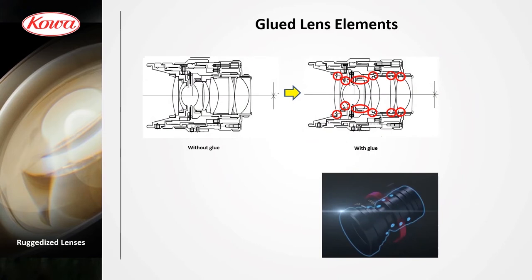The most important thing regarding the ruggedized lens is that the inner lens elements are glued. This makes the optical axis very stable. This avoids a pixel shift from object side to image side in environments of vibration — an important factor for 3D measurement applications.